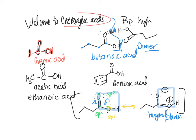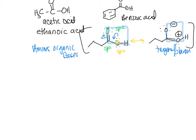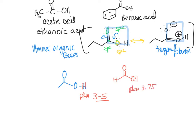Carboxylic acids are the organic acids — just as amines are your organic bases. The pKa tells us the ranking of acidity. The acidic proton is the OH proton, and the pKa is generally anywhere from 3 to 5. Formic acid has a pKa of 3.75; acetic acid has a pKa of 4.74. Just remember the range of 3 to 5.